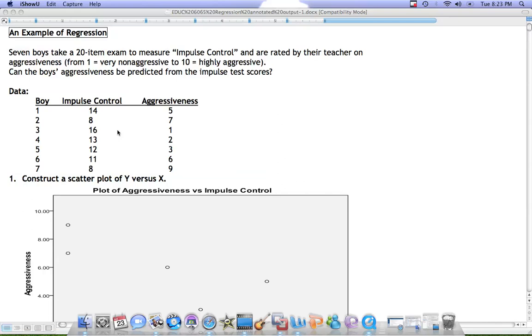The problem is seven boys take a 20 item exam to measure impulse control and are rated by their teacher on aggressiveness from 1 equals very non-aggressive to 10 equals highly aggressive. Can the boys aggressiveness be predicted from the impulse control scores?